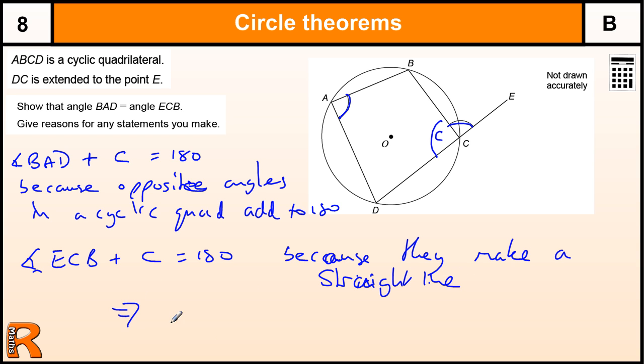This tells us that the angle BAD is equal to the angle ECB. Because they both add to C to get 180, so they both must be the same. And that's it.